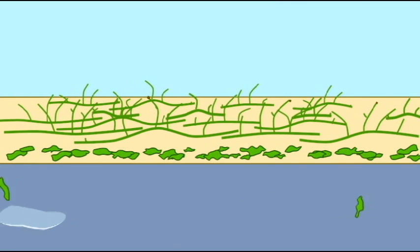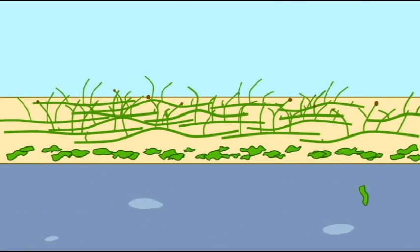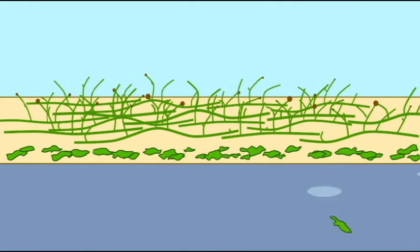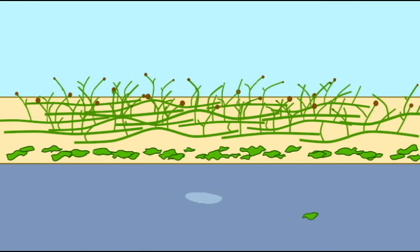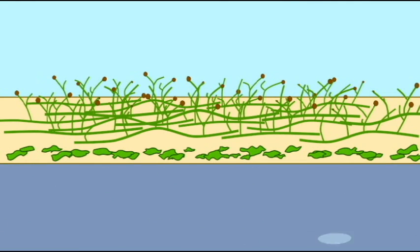These early vascular plants were only a couple of inches in height, such as Coxonia, which was very common during the time, and they did not yet possess leaves.